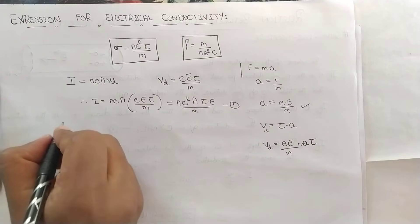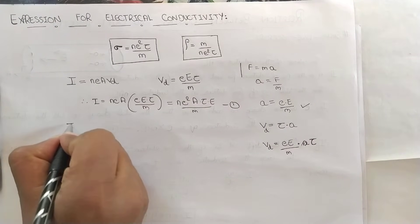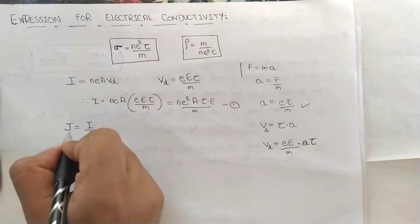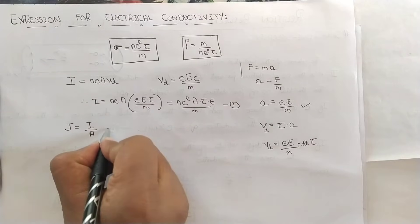I hope you all know what is current density which is represented by J. It is nothing but current I over A, cross sectional area. Now we have expression I.